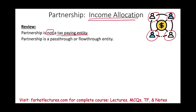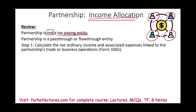However, what we have to understand in a partnership is there are two steps in allocating income, deductions, expenses, gains, losses, so on and so forth. The first step is to compute net ordinary income associated with the business — business income, business expense — that is related to what the partnership is all about: the partnership trade or business operation.